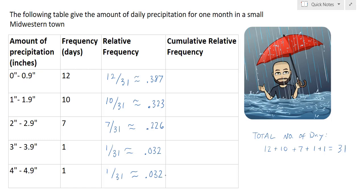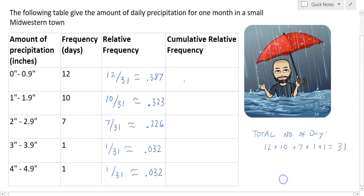The cumulative relative frequency is the relative frequencies accumulated. So for the 0 to 0.9 inch category, our cumulative relative frequency is 0.387, which means that roughly 39% of the days in the month had less than or equal to 0.9 inches of precipitation.